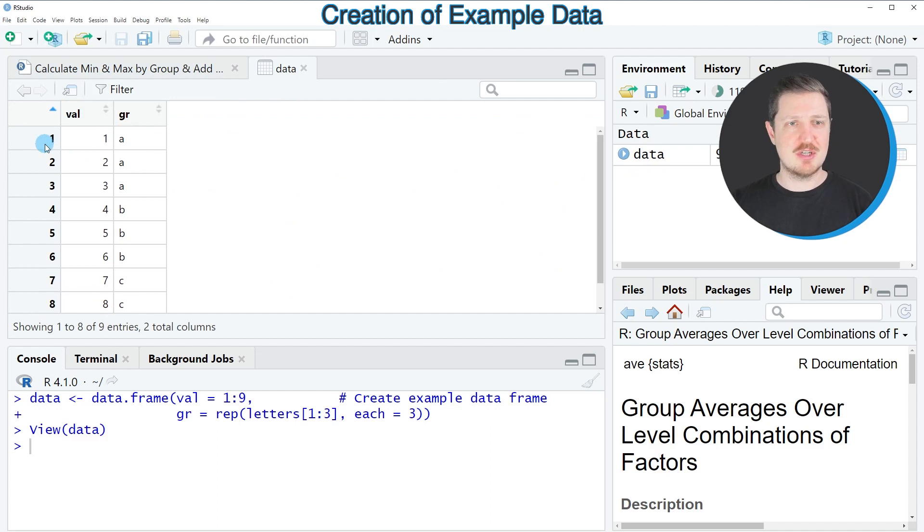And as you can see our data frame contains 9 rows and the two columns val and gr whereby the first column contains different values and the second column is a group indicator.